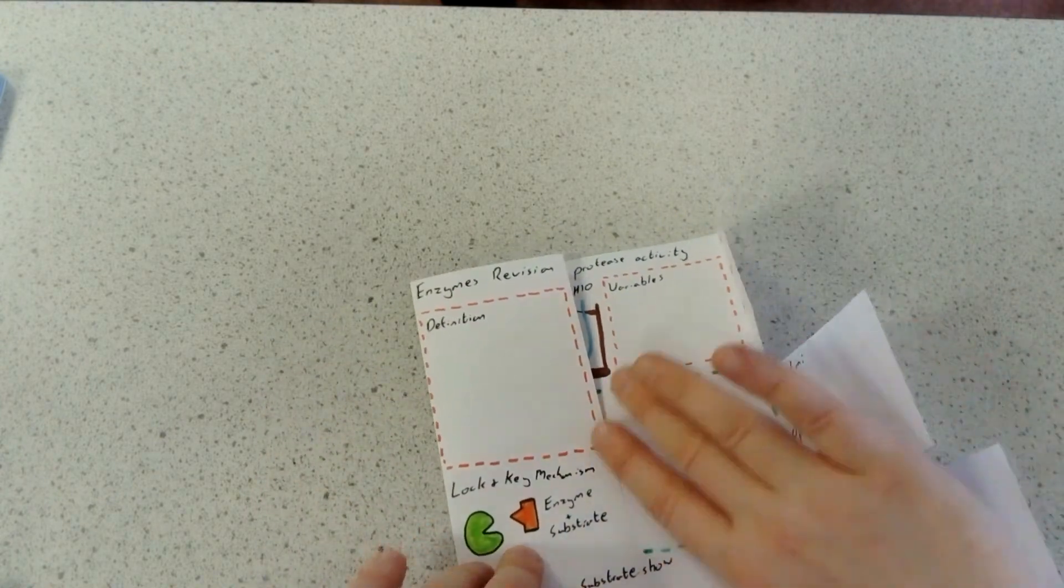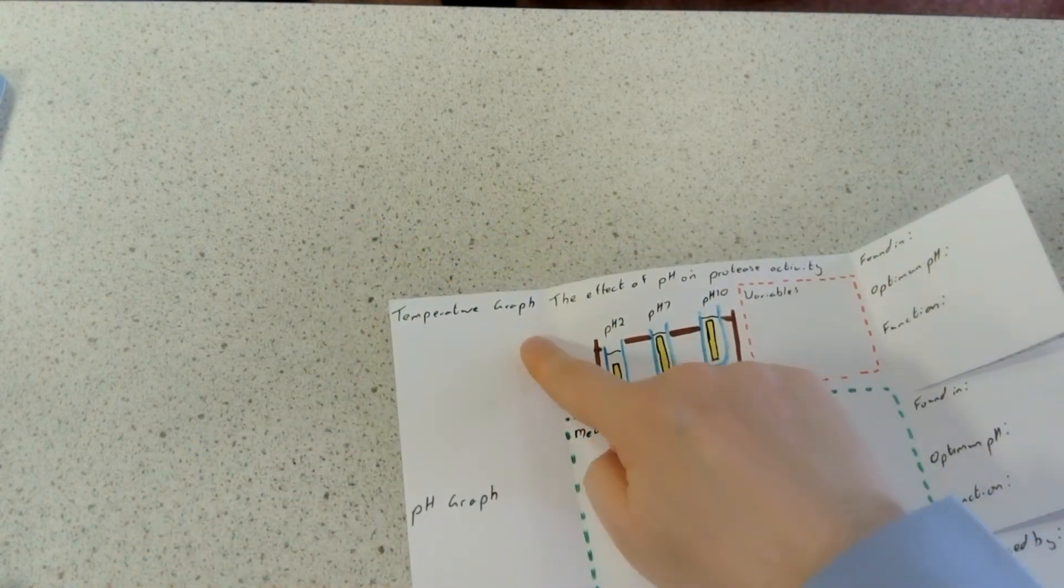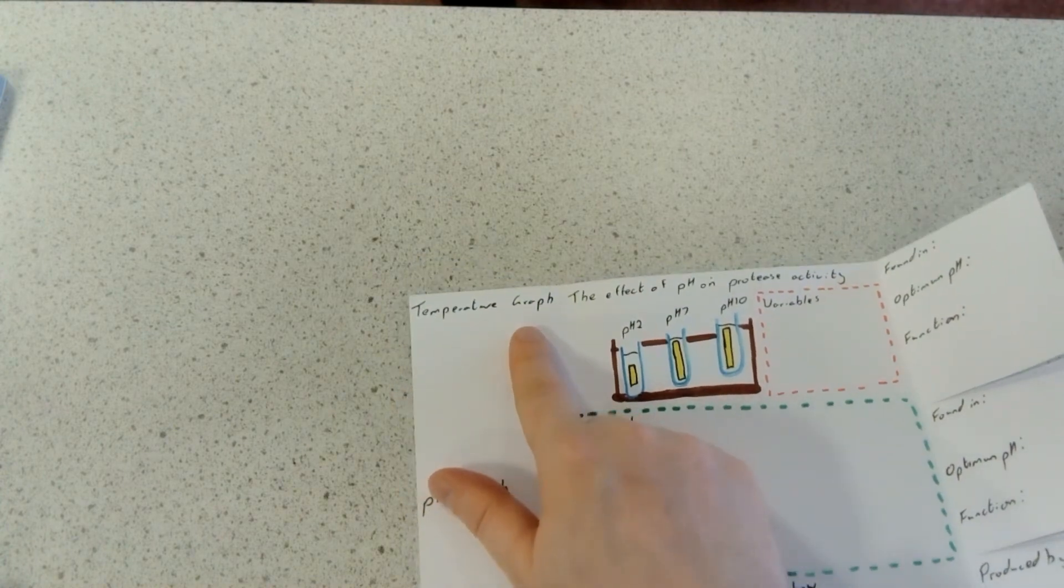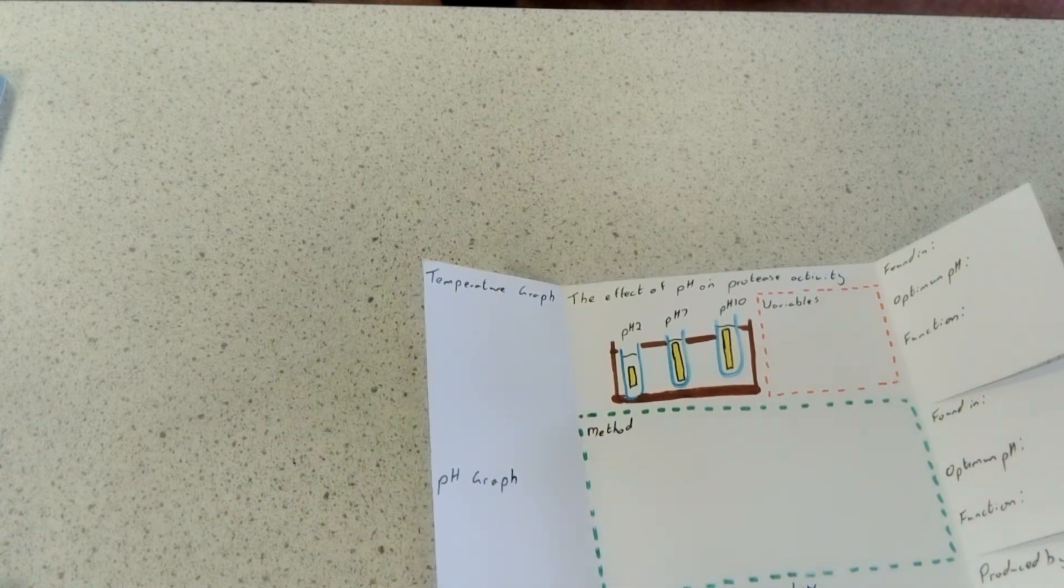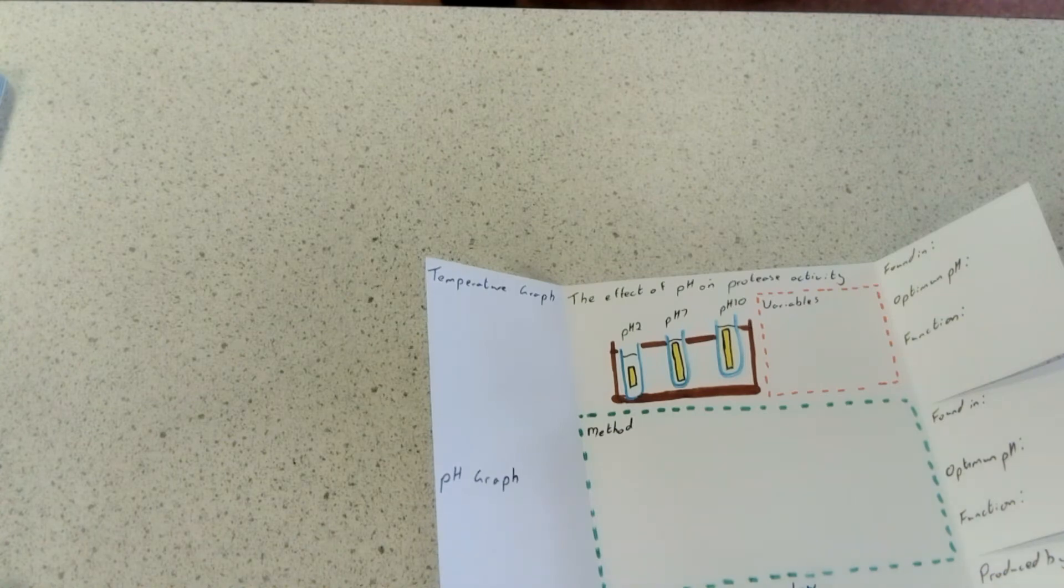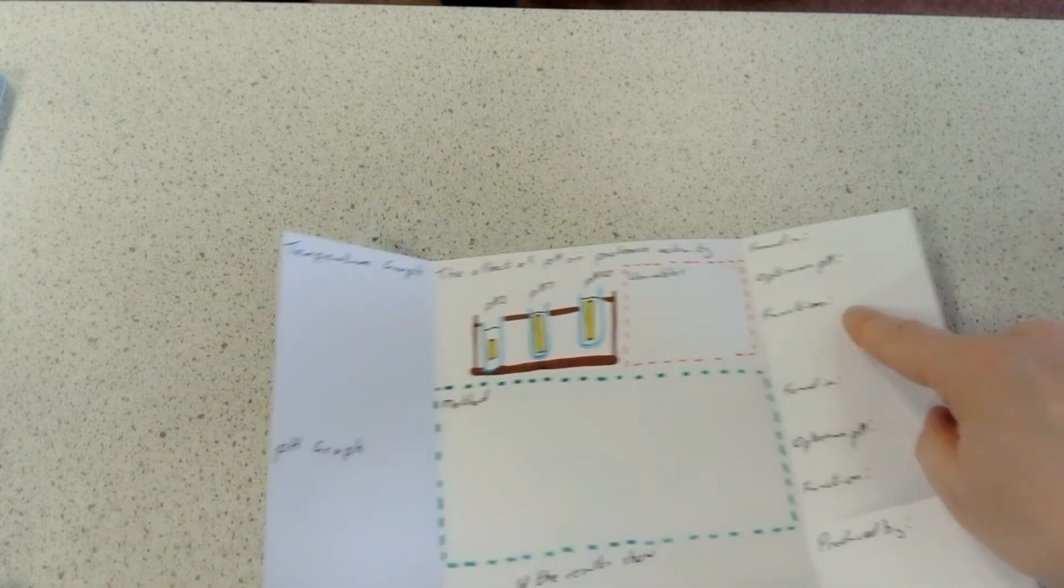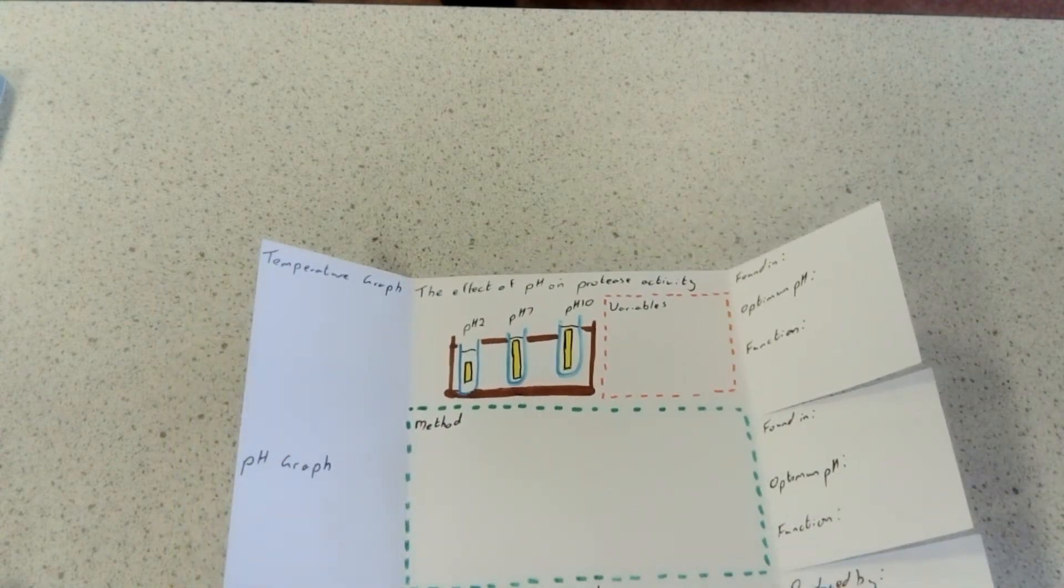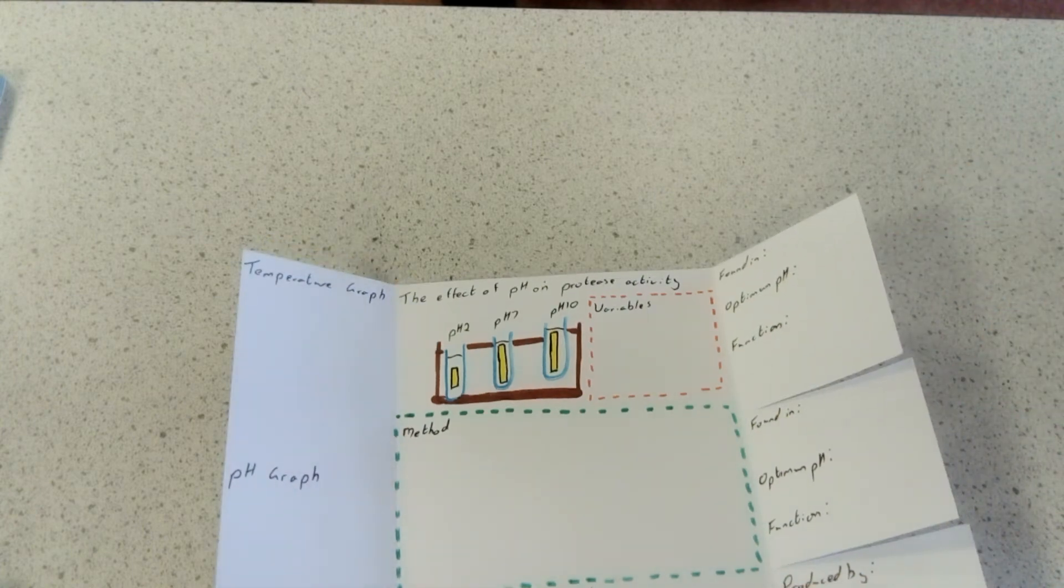On this inside part, include two graphs: one showing the effect of temperature on enzyme activity, and one showing the effect of pH on enzyme activity. You can look both of those up—there are plenty of examples in books and online. On the pH activity graph specifically, I want to see these three enzymes: what pH lipase works best at, what pH protease works best at.